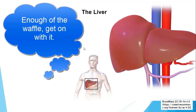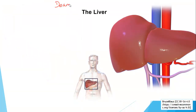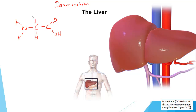Today we're interested in the liver's role in deamination. I'm going to draw a generic amino acid diagram here. At the top we have a variable R group, which could be any of 20 different R groups in amino acids involved in life. Then we have an amine group on one side and an acid group on the other. So why does deamination have to happen?